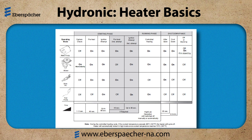Let's look at the operation of the heater. There is a starting phase, running phase, and the shutdown phase. Once the heater receives the start signal, a quick safety check is done with the coolant pump, blower motor, glow pin, fuel pump, and safety sensors checking in — this takes a few seconds. The heater then goes into the first preheat, about 45 seconds.